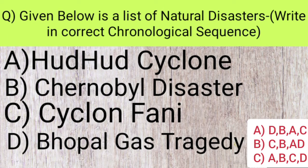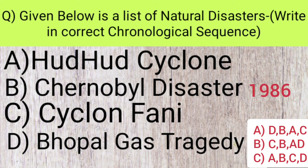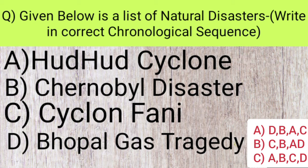The next question provides a list of natural disasters — Hudhud cyclone, Chernobyl nuclear plant disaster, cyclone Fani, and Bhopal gas tragedy — and asks you to arrange them in correct chronological order. The correct option is option A: the Bhopal gas tragedy occurred in 1984, followed by the Chernobyl nuclear plant disaster in the Ukrainian SSR in 1986, then Hudhud cyclone in October 2014, and finally cyclone Fani in 2019.